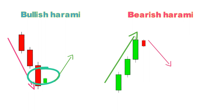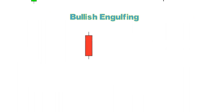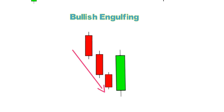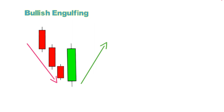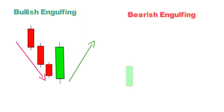The next one is Bullish Engulfing. This big green candle indicates the downtrend is over — bears have lost control. No confirmation is needed for big bodies; this big body itself indicates the trend is shifting. The opposite of Bullish Engulfing is Bearish Engulfing.